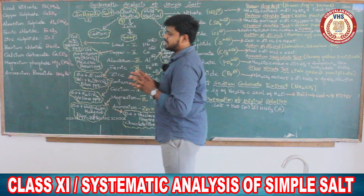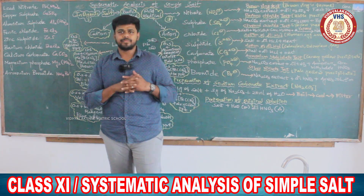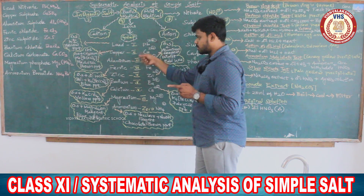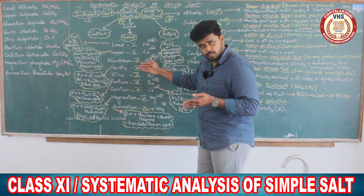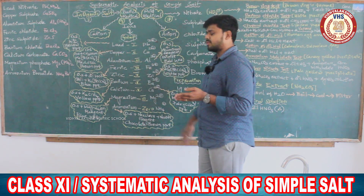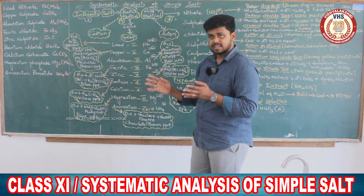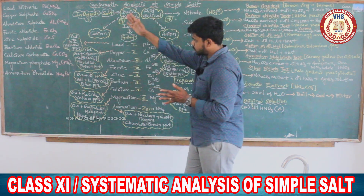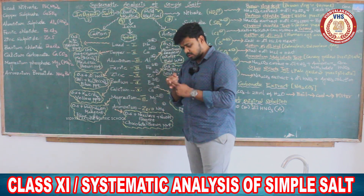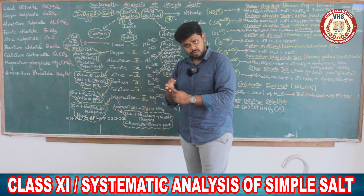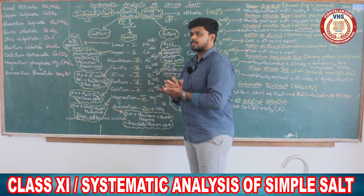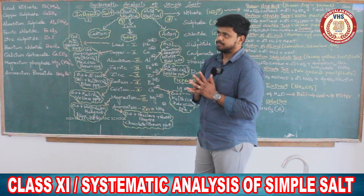In the basic radical, they have been grouped. Lead belongs to group 1, copper belongs to group 2, aluminum and iron to group 3, zinc to group 4, barium and calcium to group 5, magnesium to group 6, and ammonium comes under the category called zero group. This is the grouping animation.